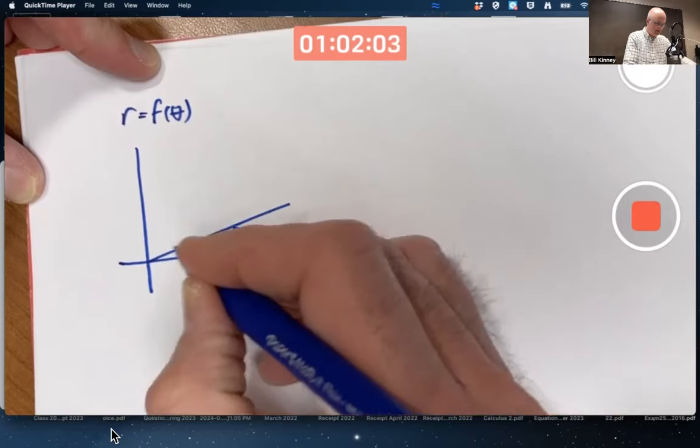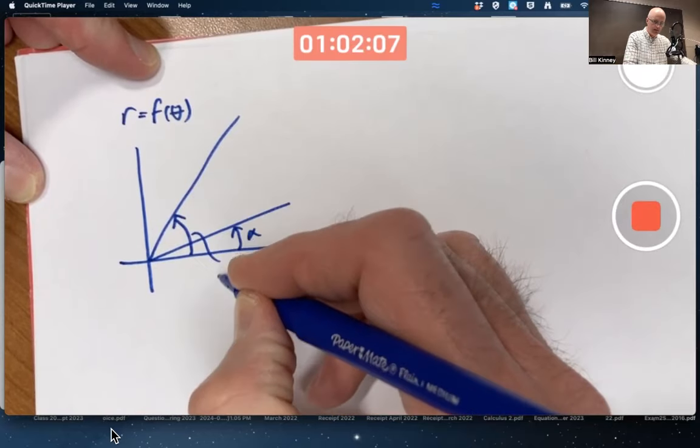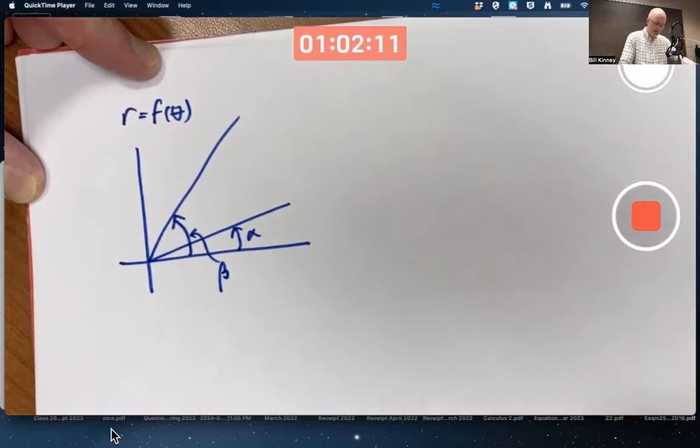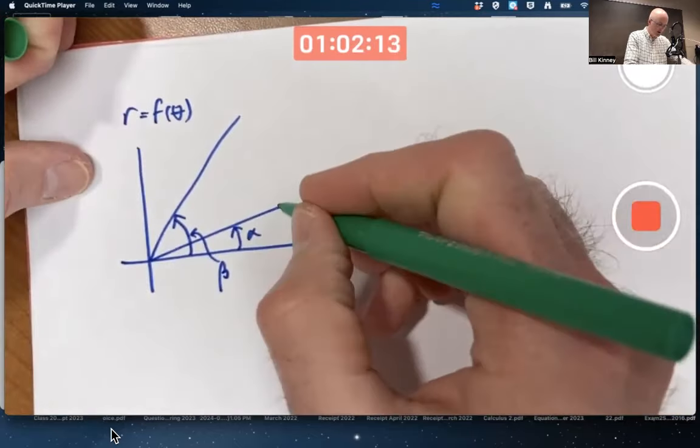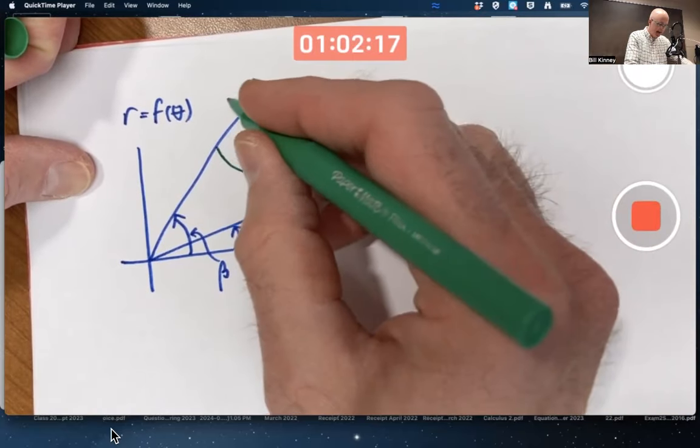I mean, they don't have to be in the first quadrant, it's just easier to draw. Alpha and beta, you've got some arbitrary polar curve where theta varies between alpha and beta.